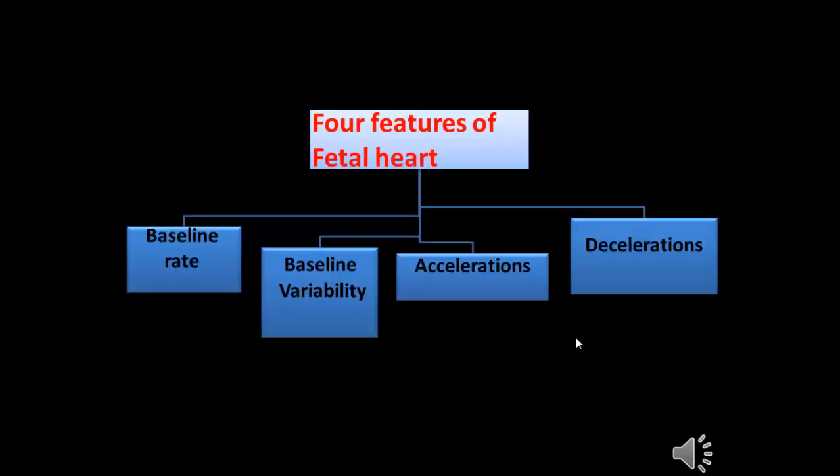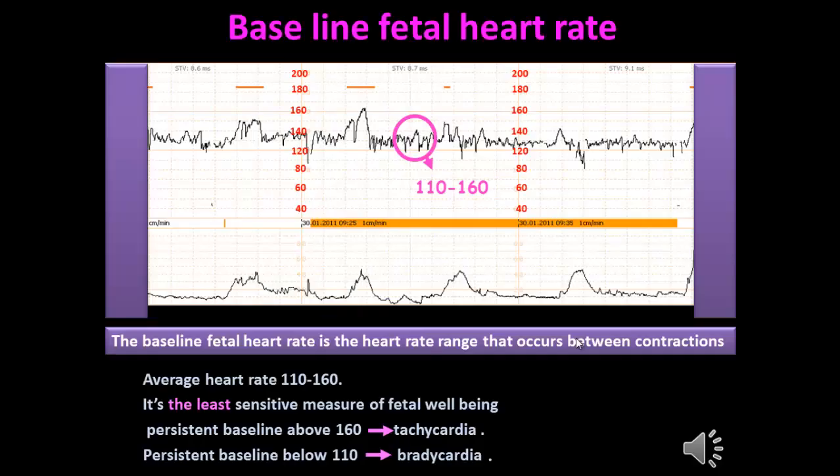When interpreting a fetal heart rate, there are four features to keep in mind: baseline rate, baseline variability, baseline acceleration, and baseline deceleration, plus contractions. The baseline fetal heart rate is the heart rate occurring between contractions, so you must read the fetal heart rate between contractions.